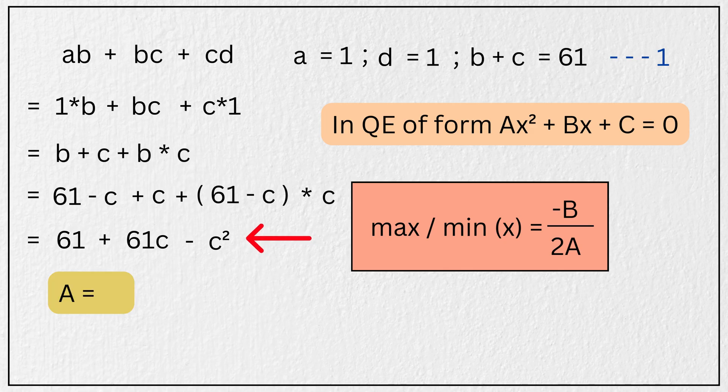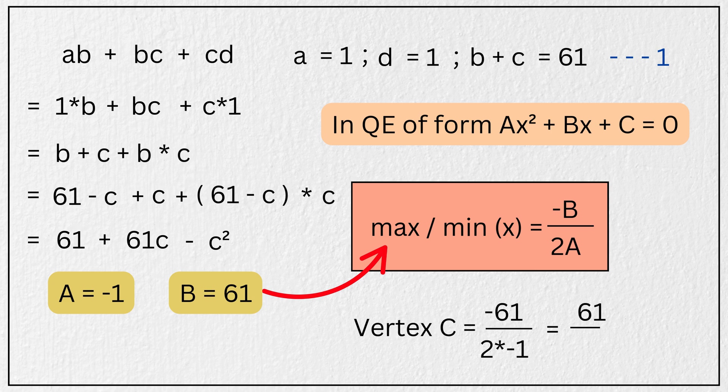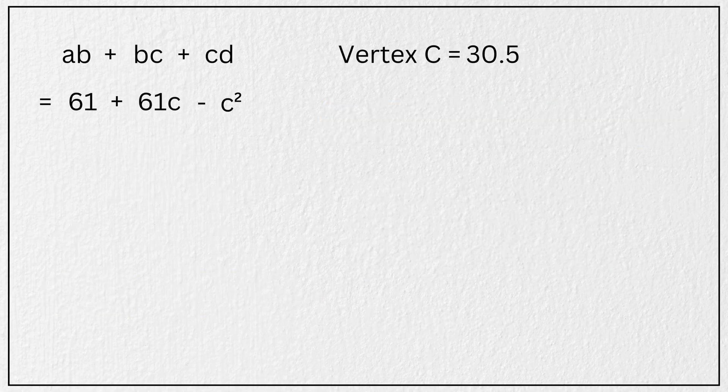And in our quadratic, A is equal to minus 1, and B is equal to 61. So applying this here, the vertex occurs when C equals negative 61 divided by 2 times negative 1, which simplifies to C equals 61 divided by 2 or 30.5.